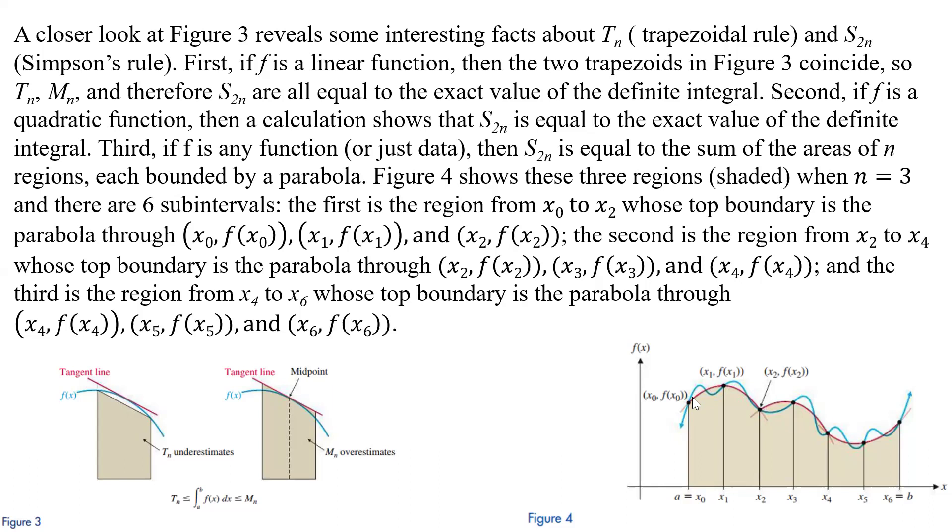And then we have the top boundary here is the parabola through the points X0 and F of X0, and then X1, F of X1, and that's going to be at the point right here. And then we have our last point, the X2, F of X2.